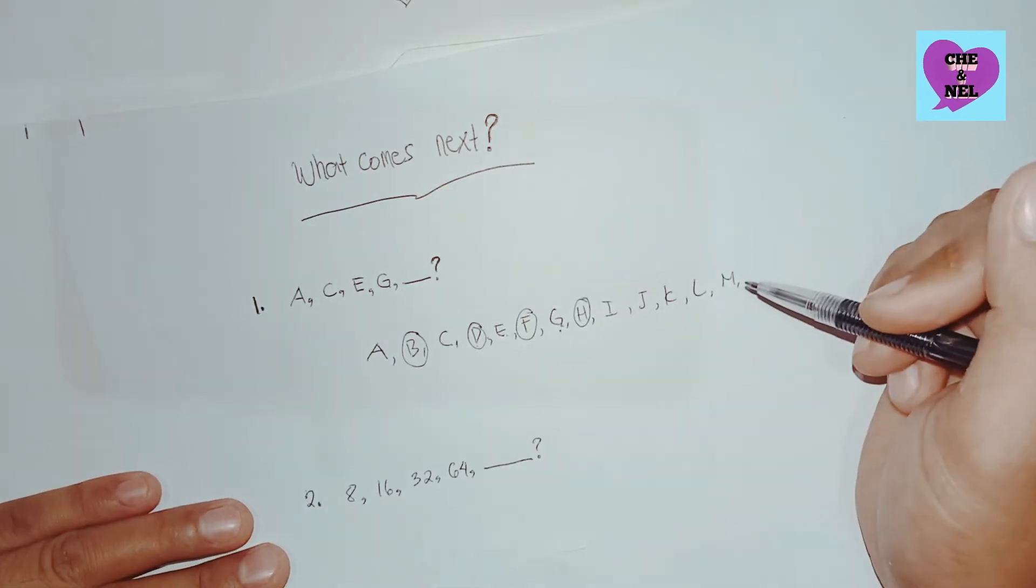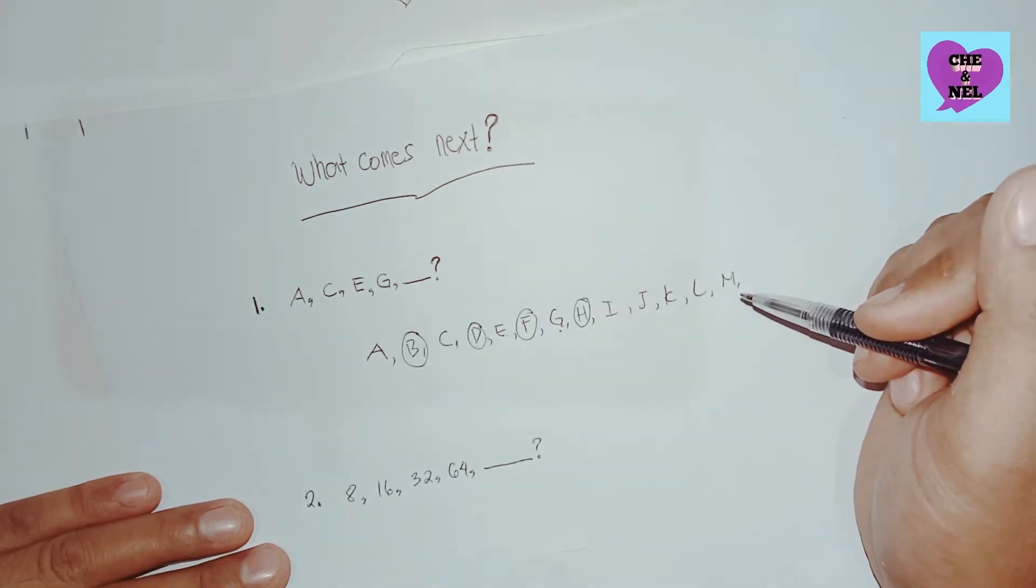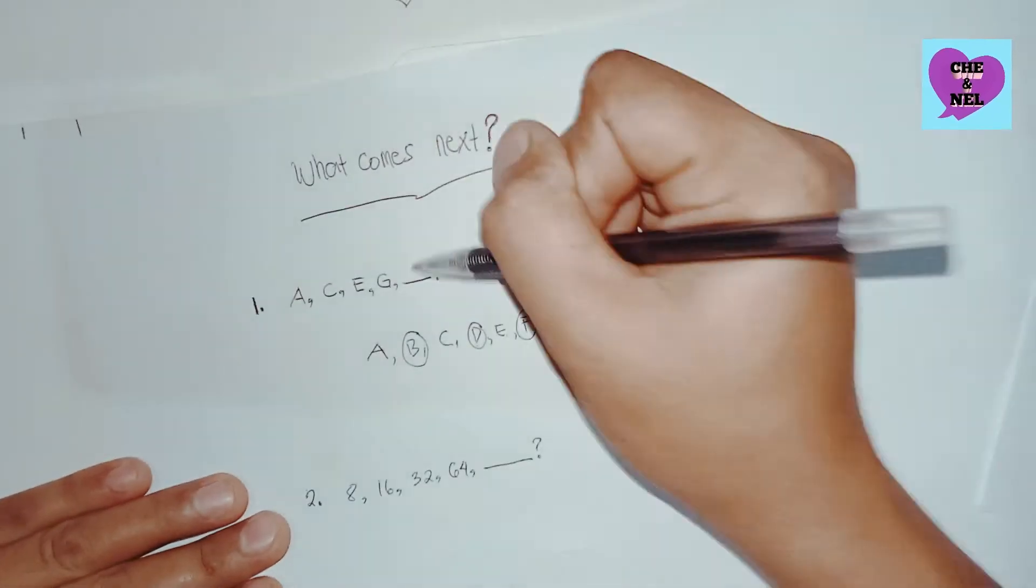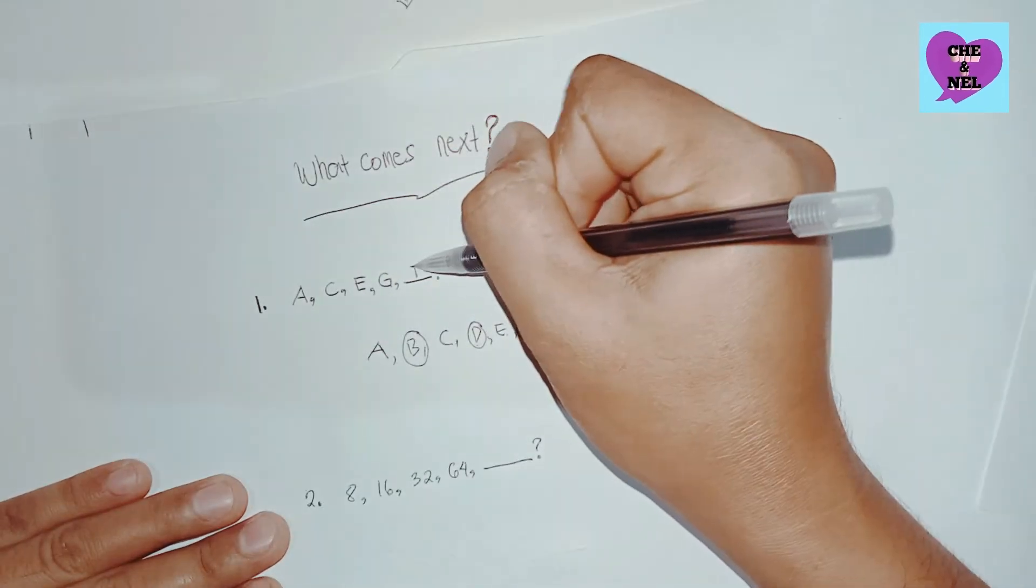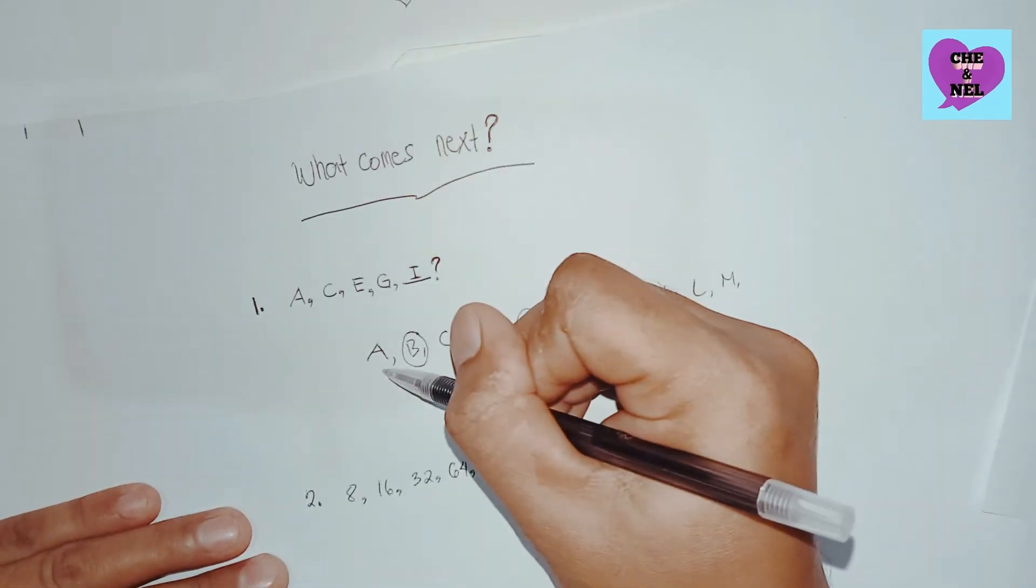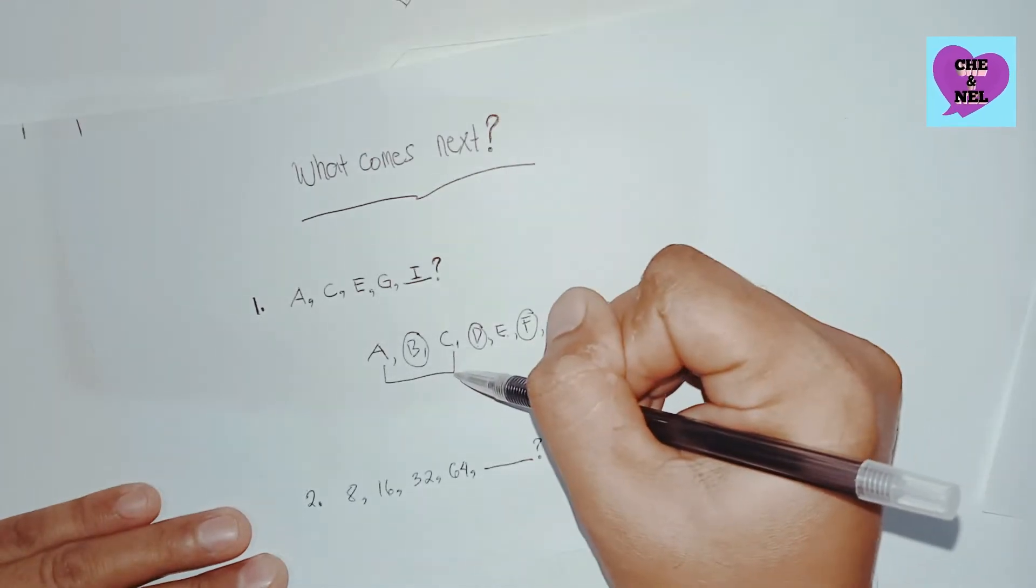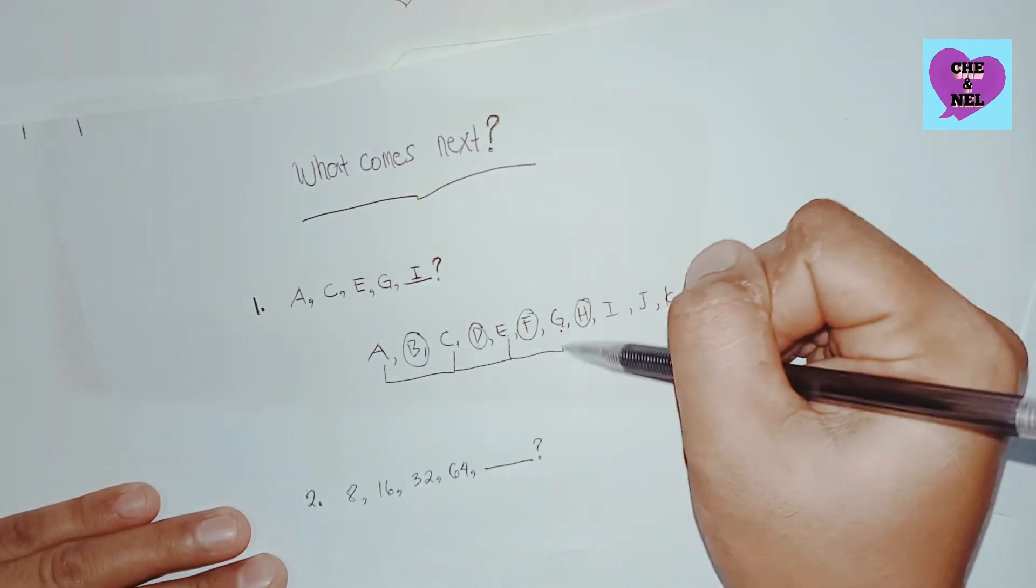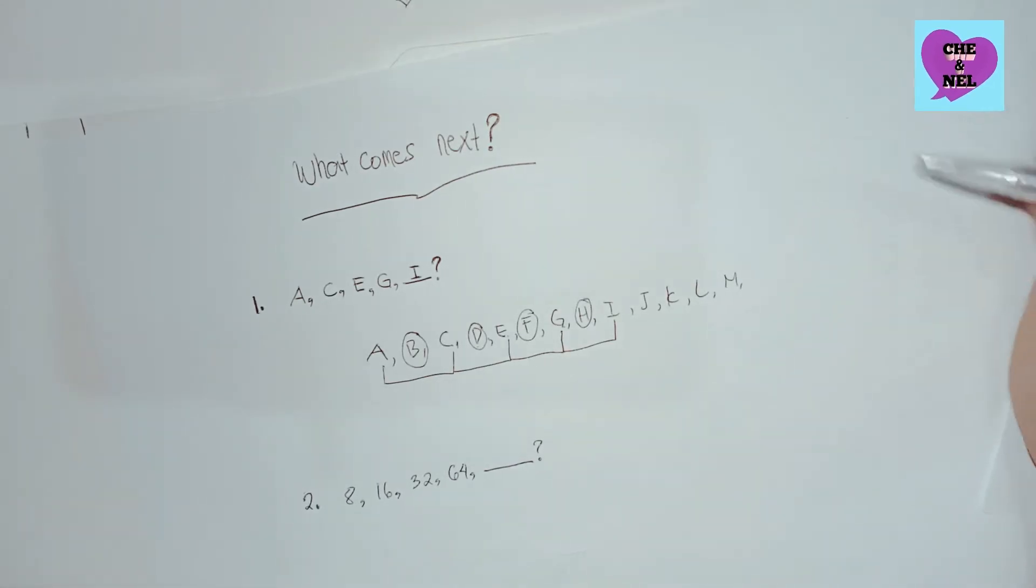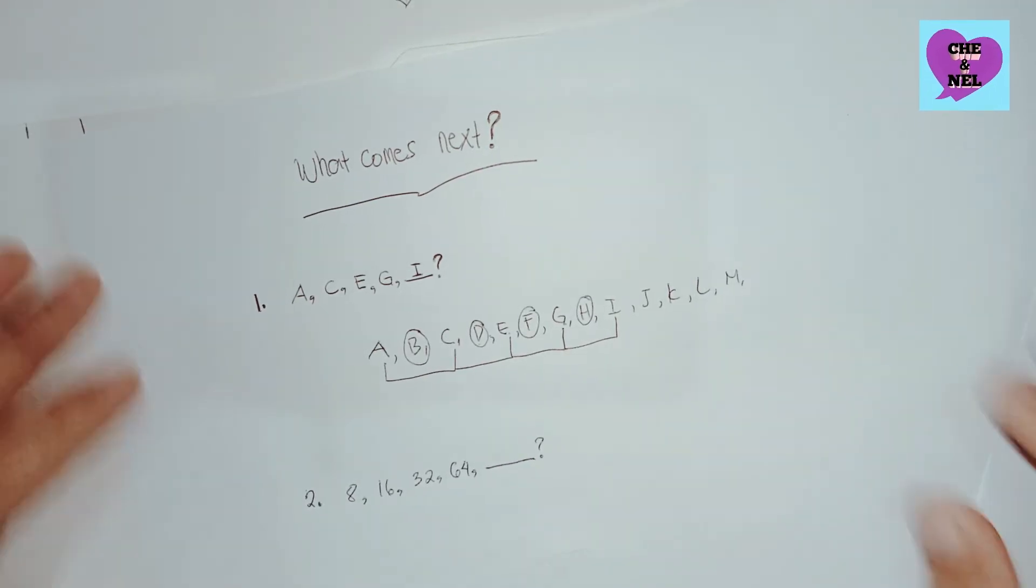That means to say the item in the blank should be I, because in our pattern we have A, C, E, G, I. It's an alternating pattern. So let's try to take up number two problem.